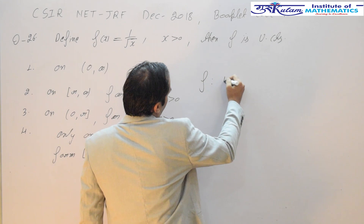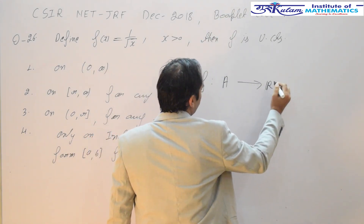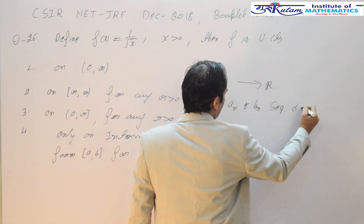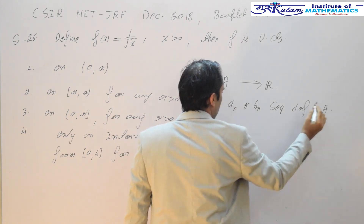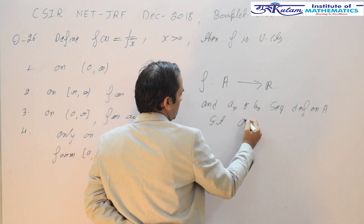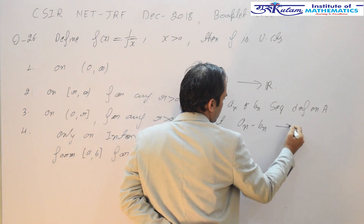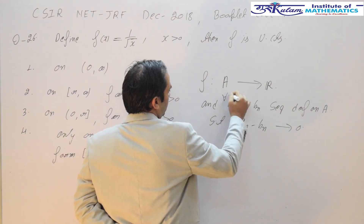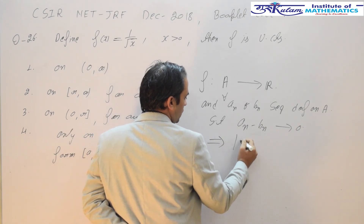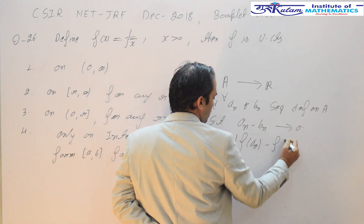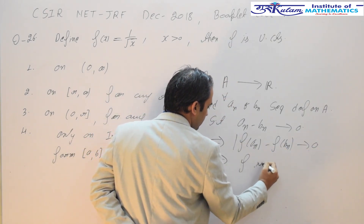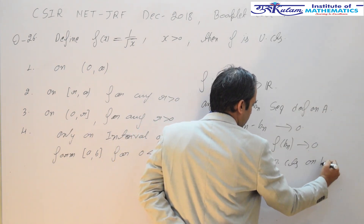We know that if f is a function defined from A to ℝ, and {aₙ} and {bₙ} are sequences defined on A such that |aₙ − bₙ| → 0, if this implies |f(aₙ) − f(bₙ)| → 0 for all such sequences, then f is uniformly continuous on E. This is a necessary and sufficient condition for a function to be uniformly continuous on E.